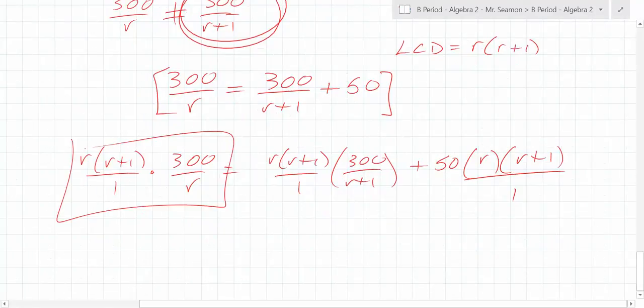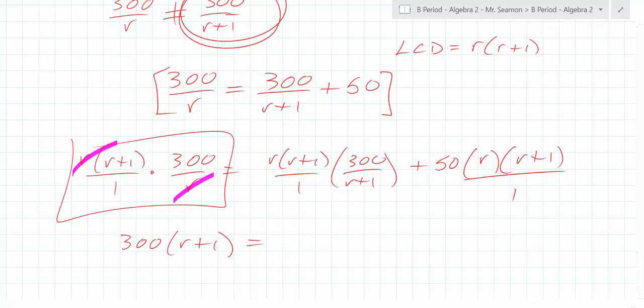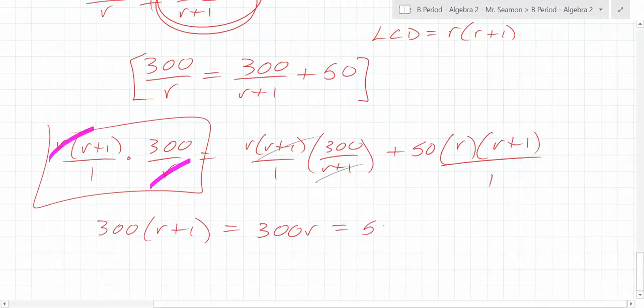So there's a challenge though at this point. What is it? We have two variables. So what do we do? Find the LCD. And when you find that LCD, you multiply everything by that. r times r plus 1 over 1 times 300 over r equals r times r plus 1 over 1 times 300 over r plus 1 plus 50 times r times r plus 1 over 1. What cancels right here? The r cancels. And you end up with 300 times r plus 1. What cancels on the next one? r plus 1 cancels leaving you with 300r plus 50r times r plus 1.